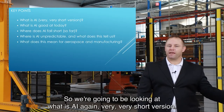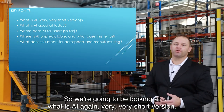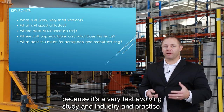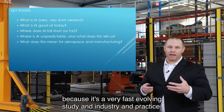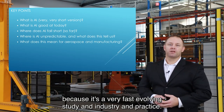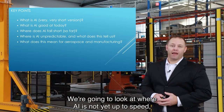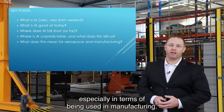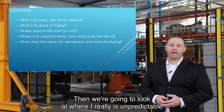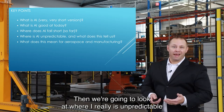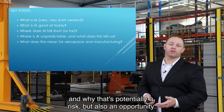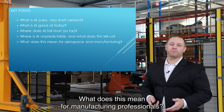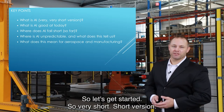We're going to look at what AI is — a very short version. We're going to look at what AI is good at today, because it's a very fast-evolving study, industry, and practice. We're going to look at where AI is not yet up to speed, especially in terms of being applied to manufacturing. Then we're going to look at where AI is unpredictable and why that's potentially a risk but also an opportunity. Finally, we'll end with what does this mean for you — what does this mean for manufacturing professionals. So let's get started.